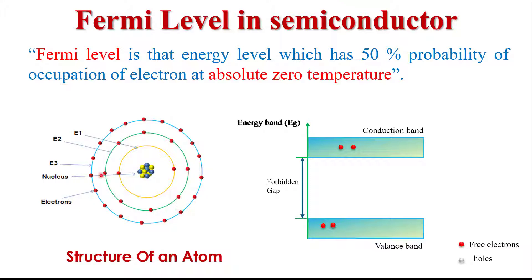This concept I will explain with the help of an energy band diagram. Here we see this is the energy band diagram. This is the valence band and this is the conduction band. Valence band is the lowest energy level where all the valence electrons exist. Conduction band is the highest energy level, and electrons in the conduction band are responsible for conduction. The difference between the valence band and conduction band is called the forbidden gap or forbidden energy gap.